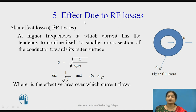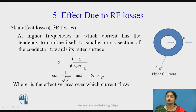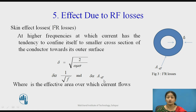The next effect is RF losses. RF losses are specified by the power equation I²R, which affects power output. At high frequency, the current has a tendency to confine itself towards the smaller cross-sectional area of the conductor, towards the surface (skin effect). The skin depth is given by √(2 / μωσ), which is inversely proportional to the square root of frequency and directly proportional to the effective area of the conductor.